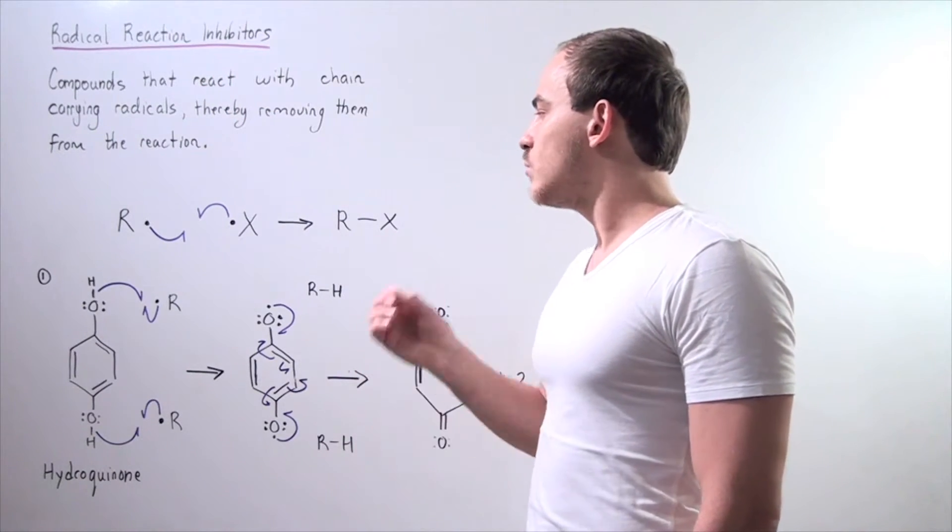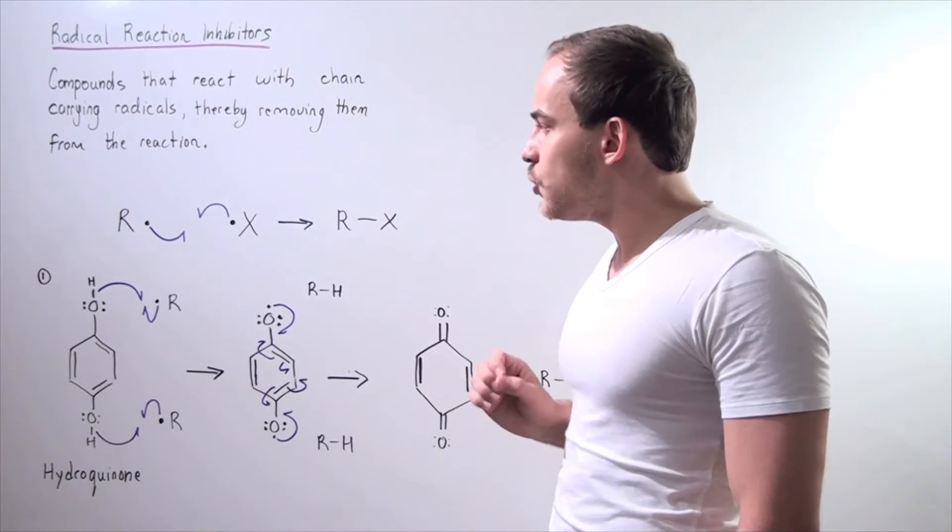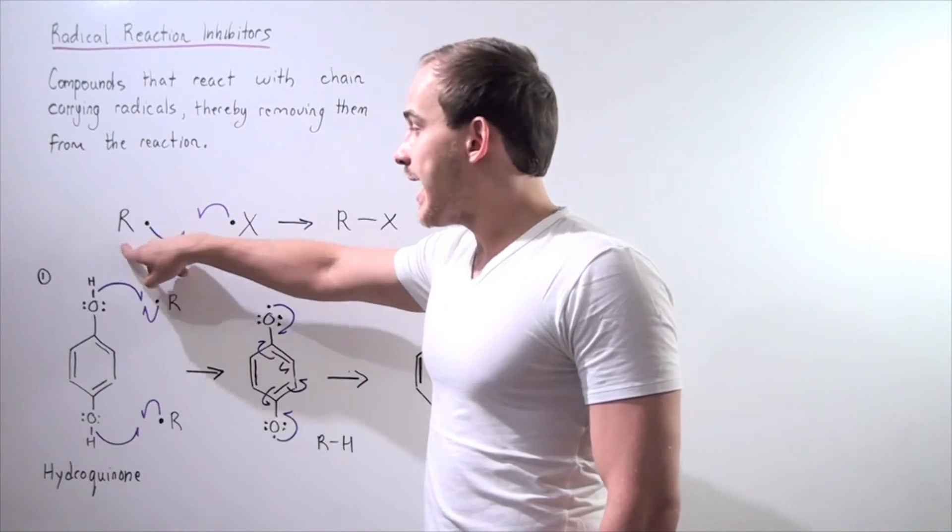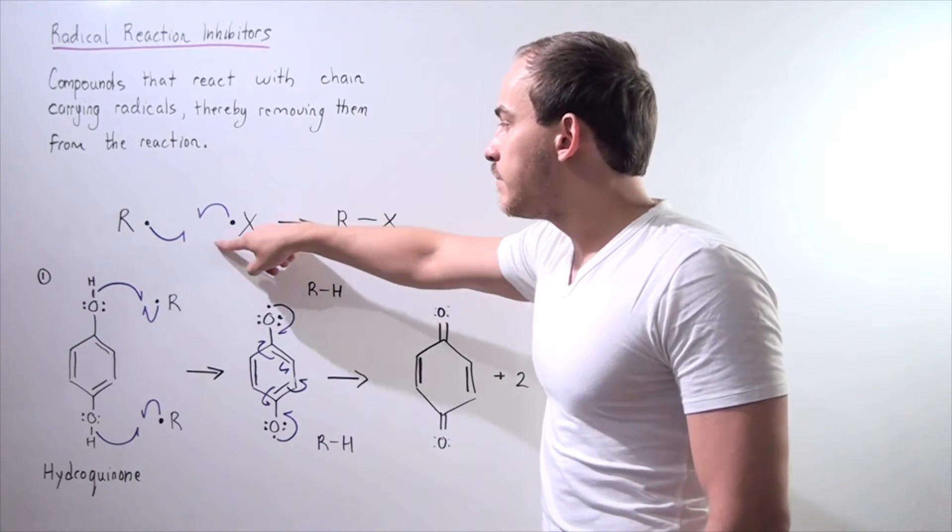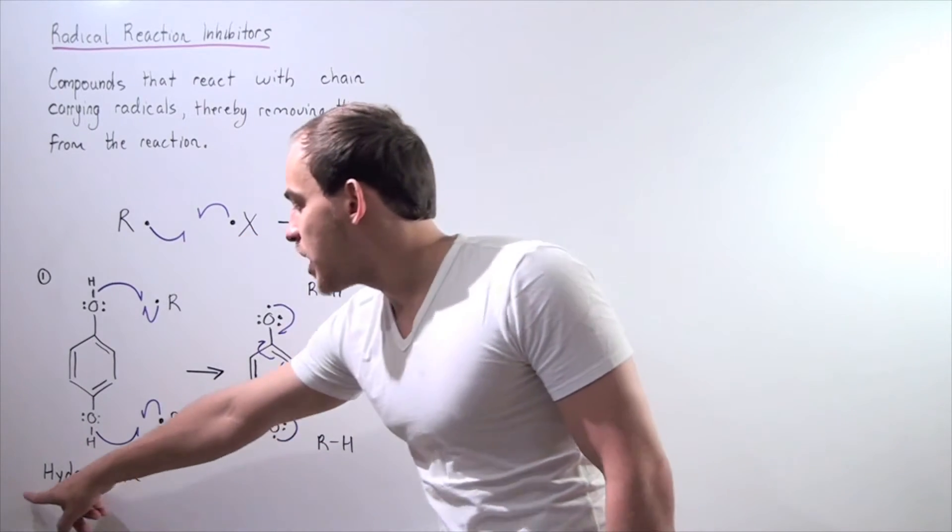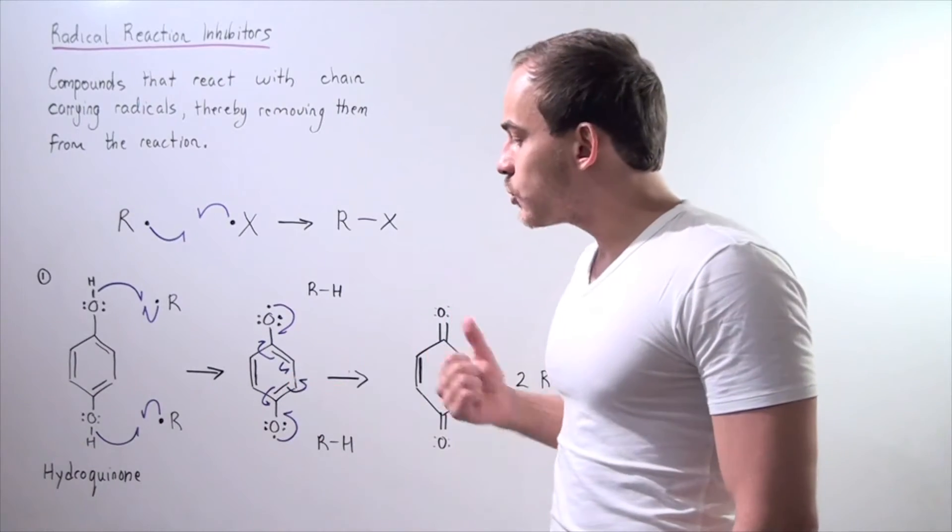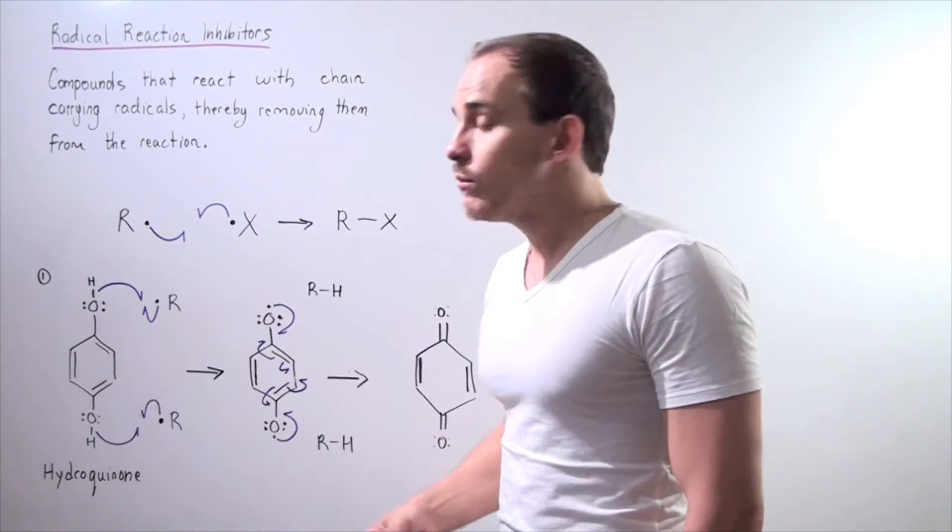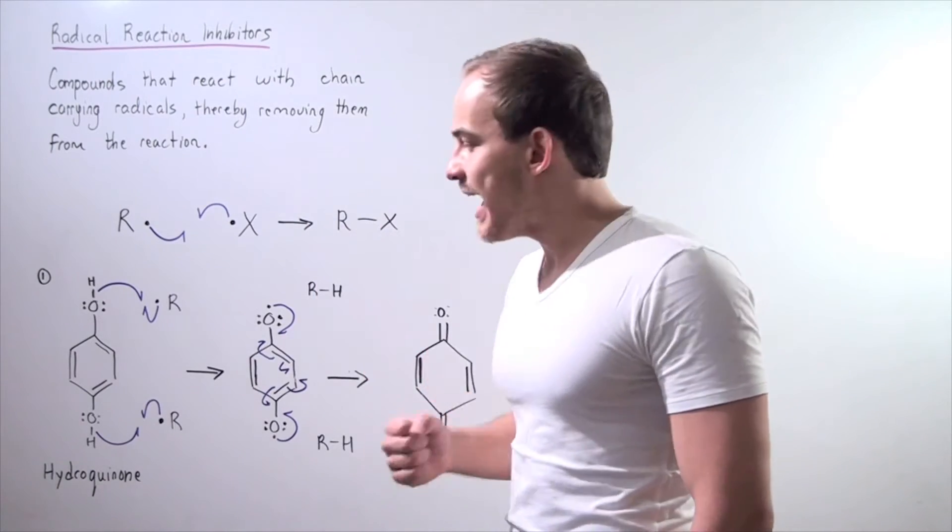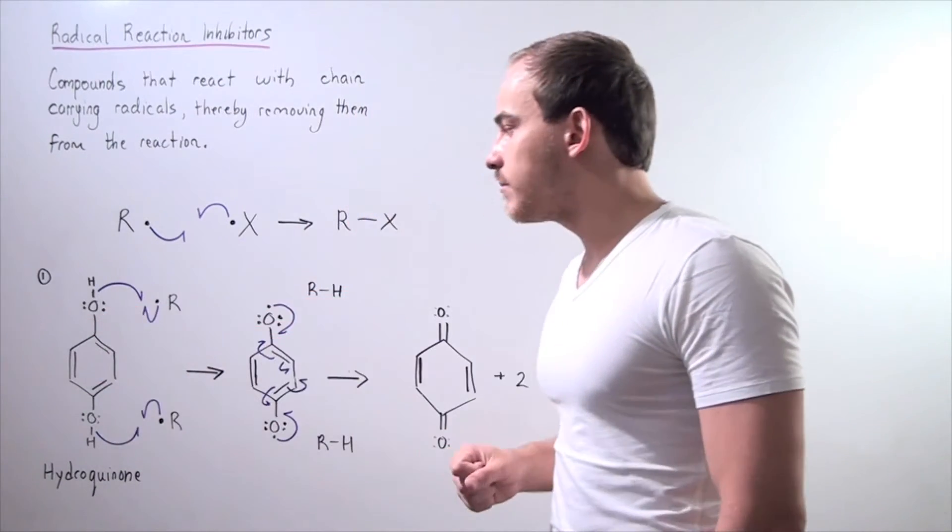So let's look at one particular example. Let's use this chain-carrying radicals shown here and let's use a specific example for our inhibitor. Let's use hydroquinone. Hydroquinone has the following structure. We have a benzene ring and we have two hydroxy groups attached to opposing carbons.